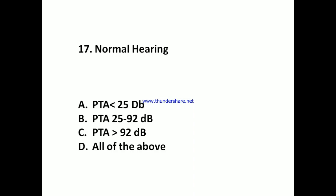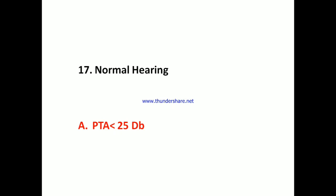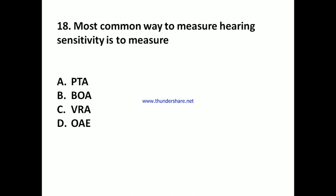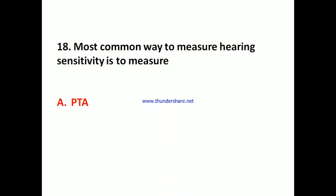Question 17: Normal hearing is PTA less than 25 dB. Answer: A) PTA less than 25 dB. Question 18: The most common way to measure hearing sensitivity is to measure: A) PTA, B) BOA, C) VRA, D) OAE. Answer: A) PTA.